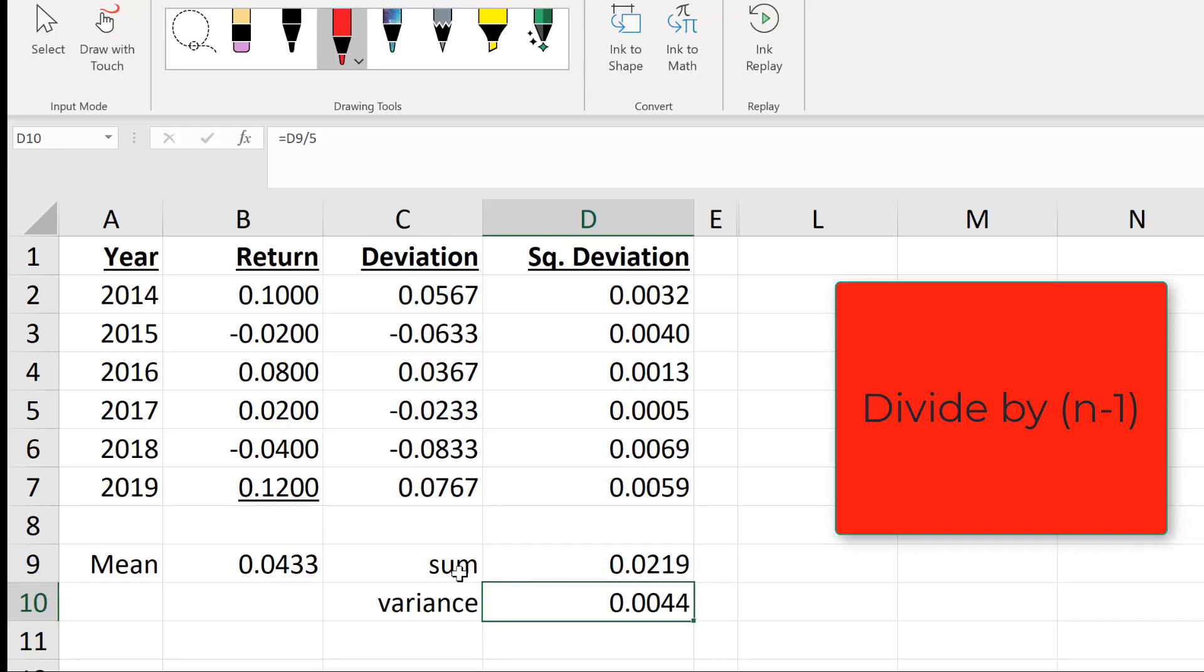Final task is to calculate the volatility or the standard deviation. Standard deviation is just the square root of the variance. We're just going to say the square root of that cell. And there we have it.